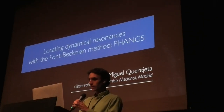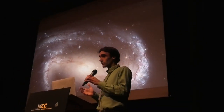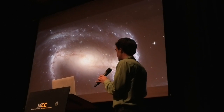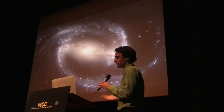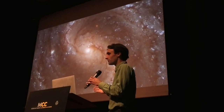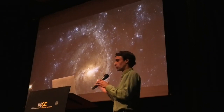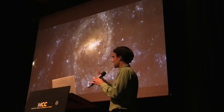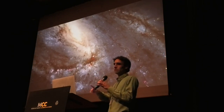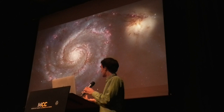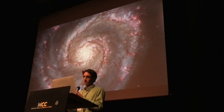As an introduction, galaxies in the local universe display a wide range of stellar structures among which bars and spirals clearly stand out, and these morphological structures have dynamical resonances associated with them, particularly the co-rotation resonance at which the pattern speed of the spiral or the bar coincides with the angular speed of the rotating material. The Font-Beckmann method is one of the methods that allow us to locate such resonances.